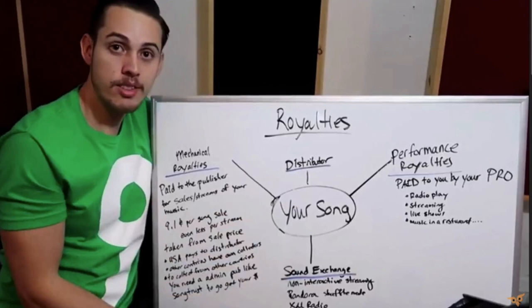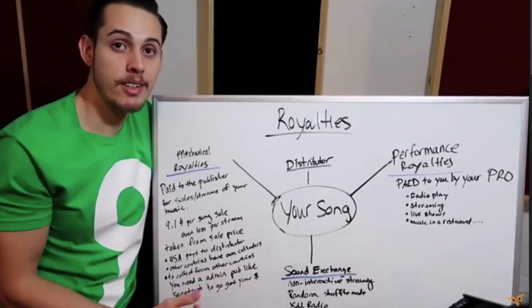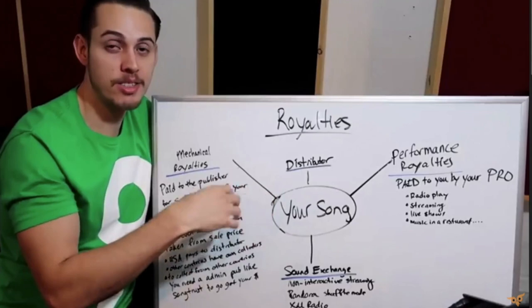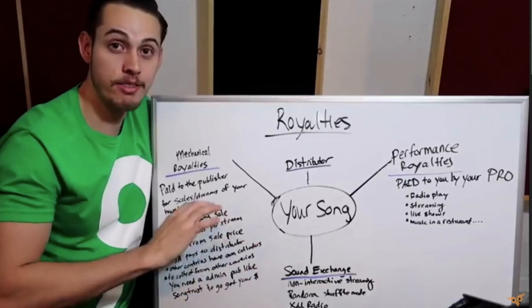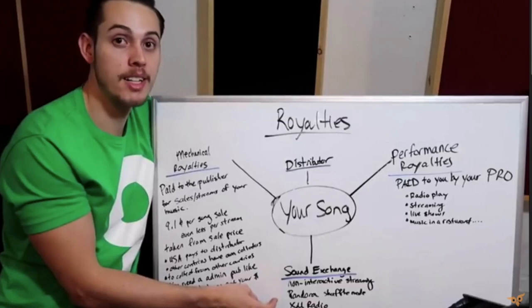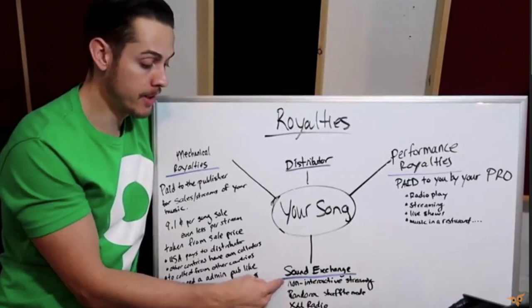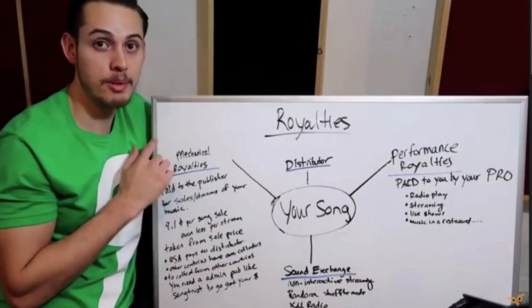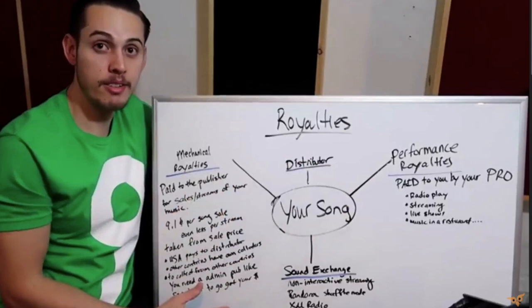Another source of income is SoundExchange. If your music is on Sirius XM or non-interactive streaming services like Pandora — where you don't pick the specific song, you just shuffle by genre — that's all paid out through SoundExchange. SoundExchange is free to sign up. If your music is on any of those platforms, you're owed royalties only collectible through SoundExchange — separate from your PRO, separate from your distributor, and not a mechanical royalty.